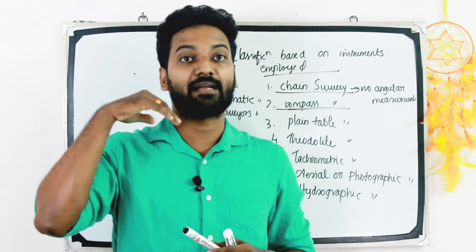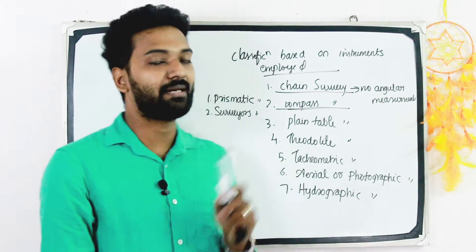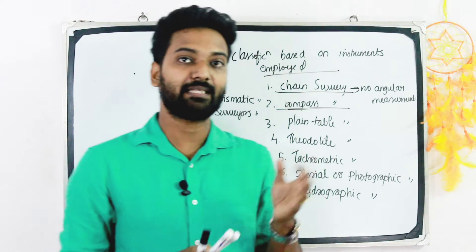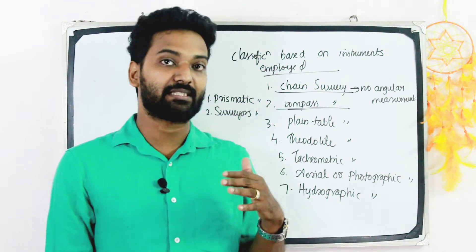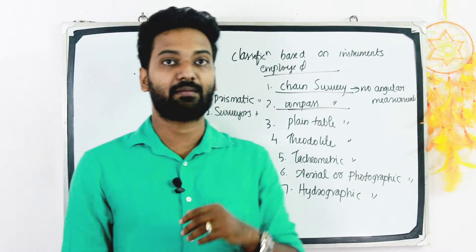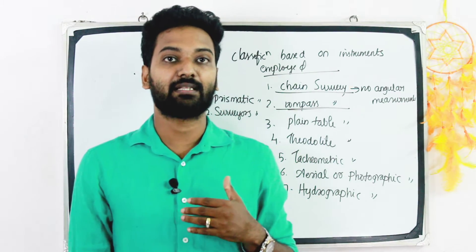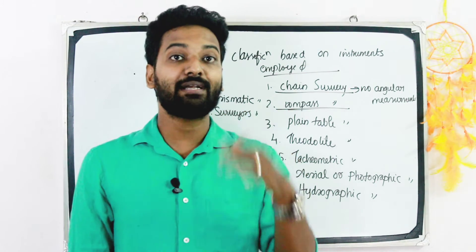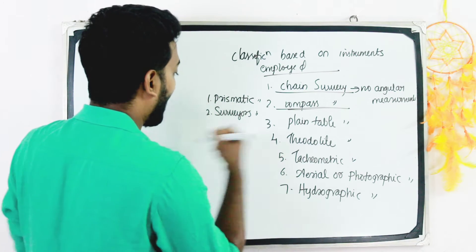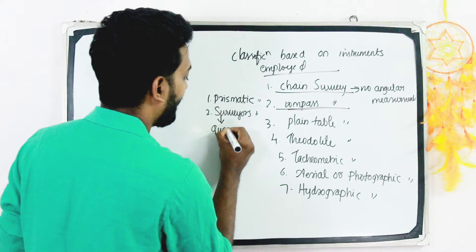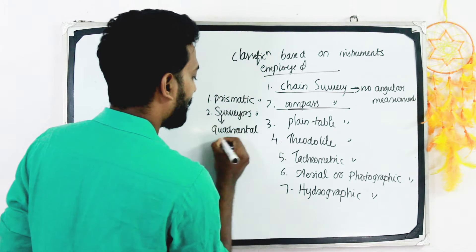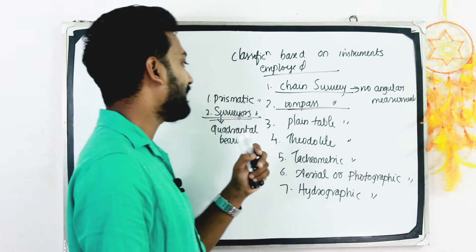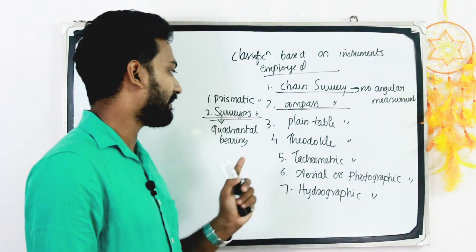The prismatic compass is suitable for rough surveys. The surveyor's compass reads quadrantal bearings. These are the two types — prismatic compass and surveyor's compass — used in compass survey.